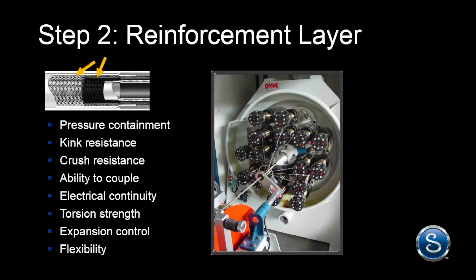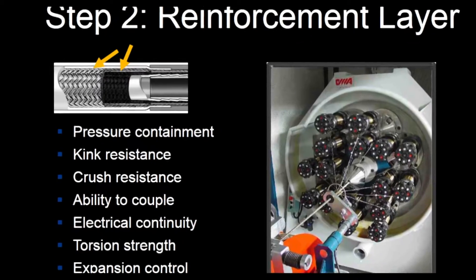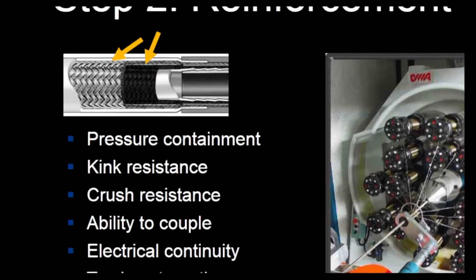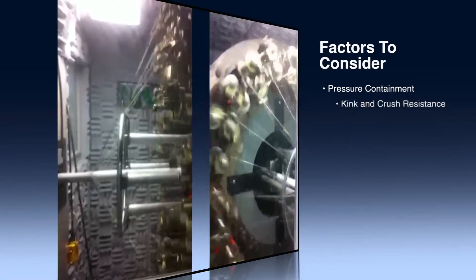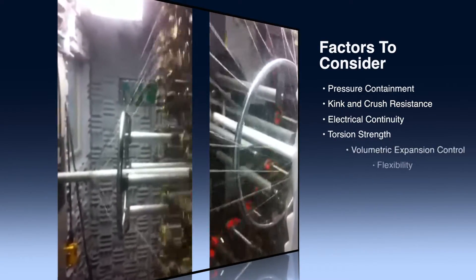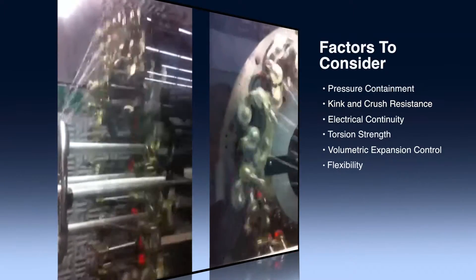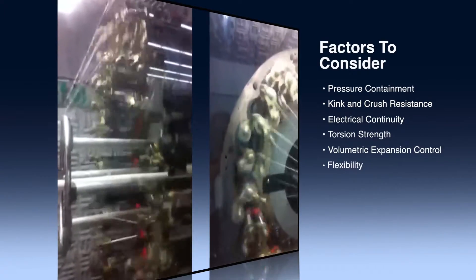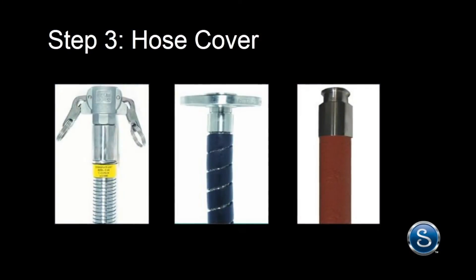Step two: select the hose reinforcement, which may be either an internal reinforcement or the cover. Factors to consider include pressure containment, kink and crush resistance, electrical continuity, torsion strength, volumetric expansion control, and flexibility. Hose reinforcements can be made from a number of materials, from fabric to metallic.